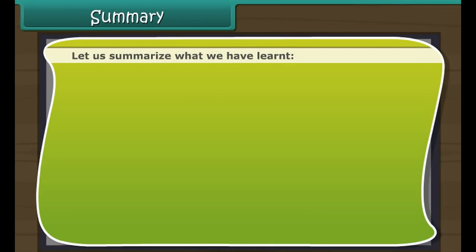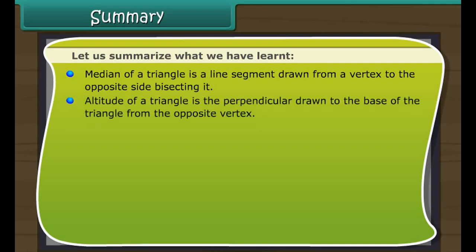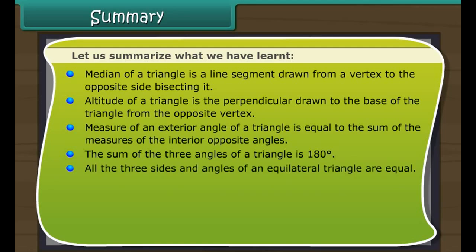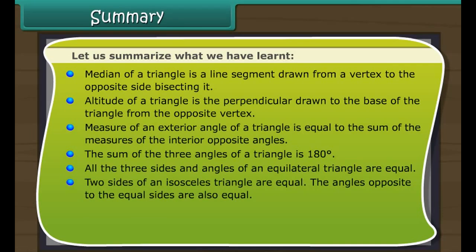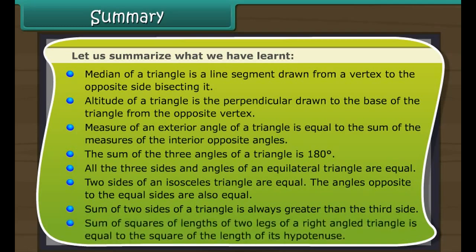Summary: the median of a triangle is a line segment drawn from a vertex to the opposite side, bisecting it. The altitude is the perpendicular drawn to the base from the opposite vertex. The measure of an exterior angle equals the sum of the interior opposite angles. The sum of the three angles of a triangle is 180 degrees. All three sides and angles of an equilateral triangle are equal. Two sides of an isosceles triangle are equal, and the angles opposite those equal sides are also equal. The sum of any two sides is always greater than the third side. The sum of the squares of the two legs of a right-angled triangle equals the square of the hypotenuse.